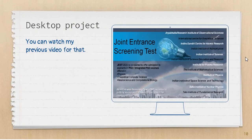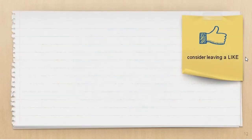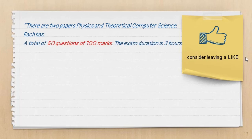What is the exam format for JEST? There are two types of papers: physics and theoretical computer science. Each paper has a total of 50 questions worth 100 marks, and the exam duration is 3 hours.